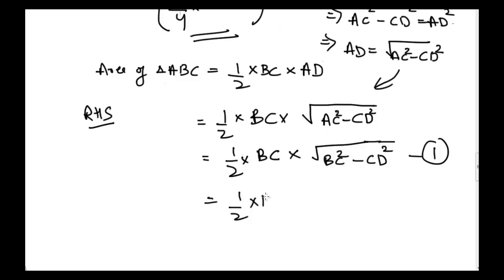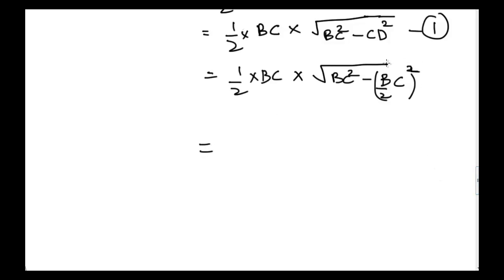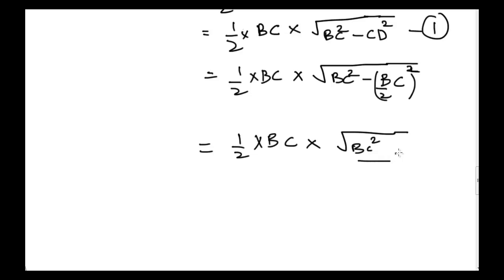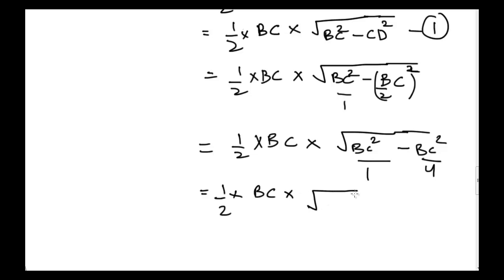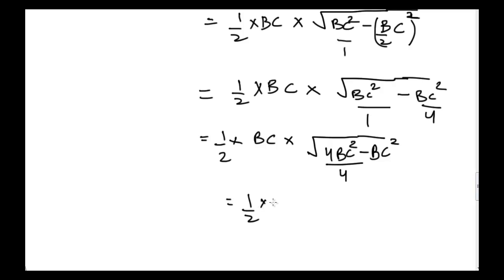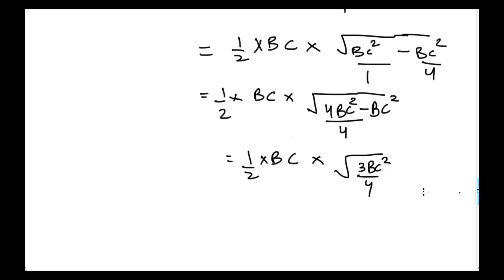Replacing CD with BC/2 in equation one, we get area equals 1/2 times BC times square root of BC squared minus (BC/2) squared. Simplifying inside the square root: BC squared minus BC squared over 4, which gives us square root of (4BC squared minus BC squared) over 4, equal to square root of 3BC squared over 4.